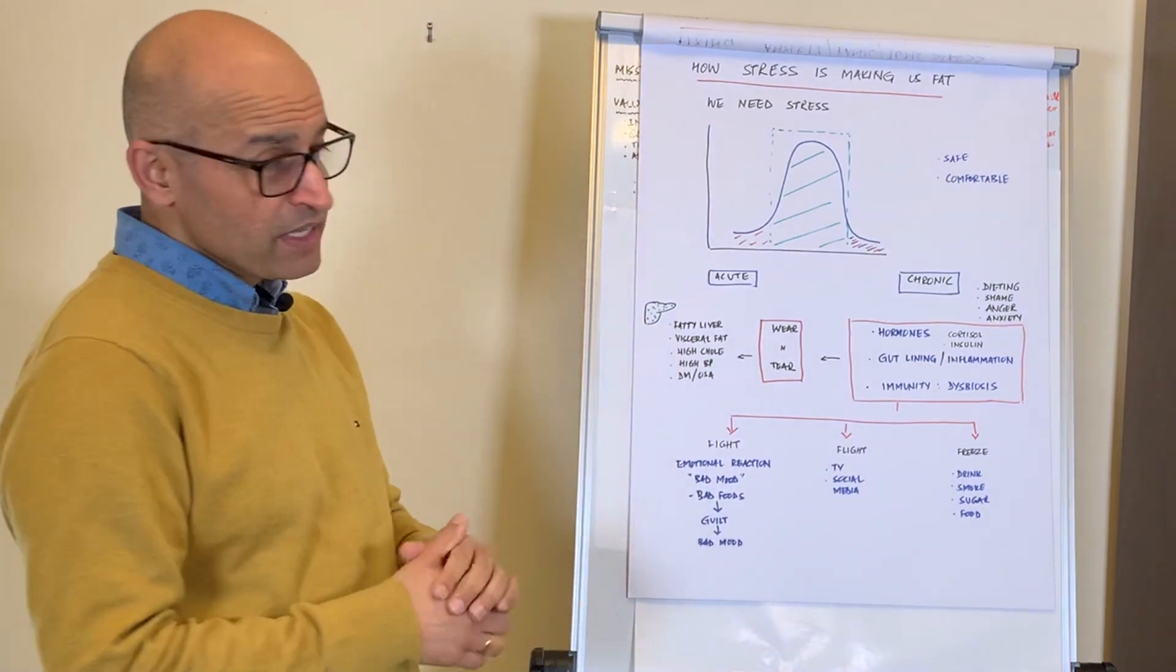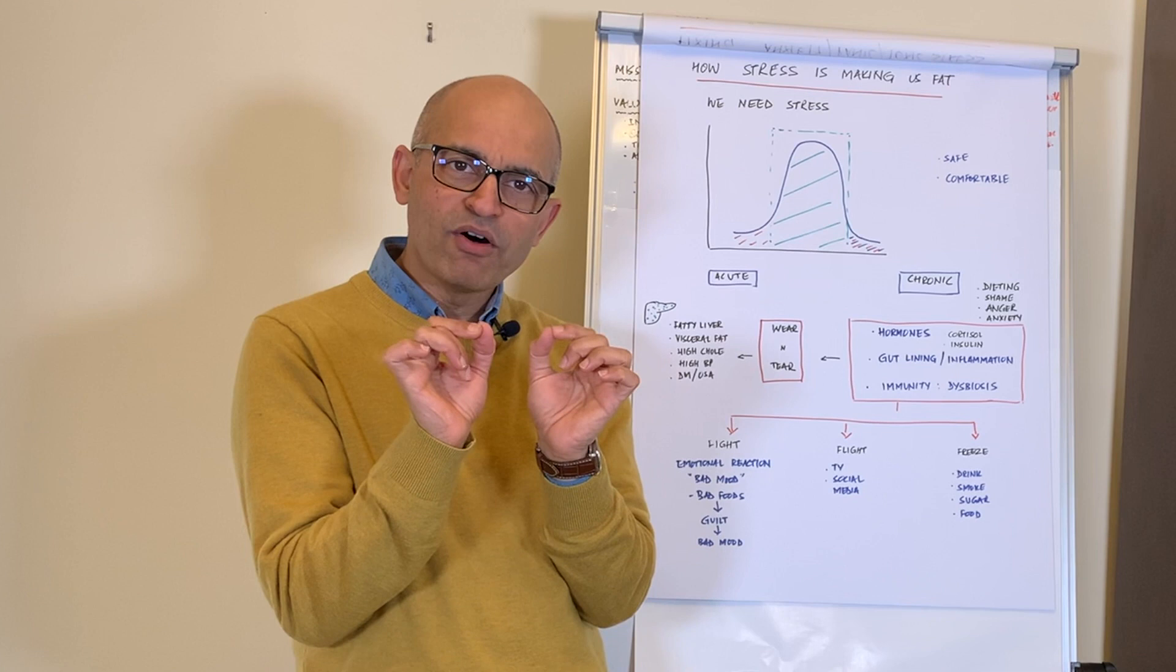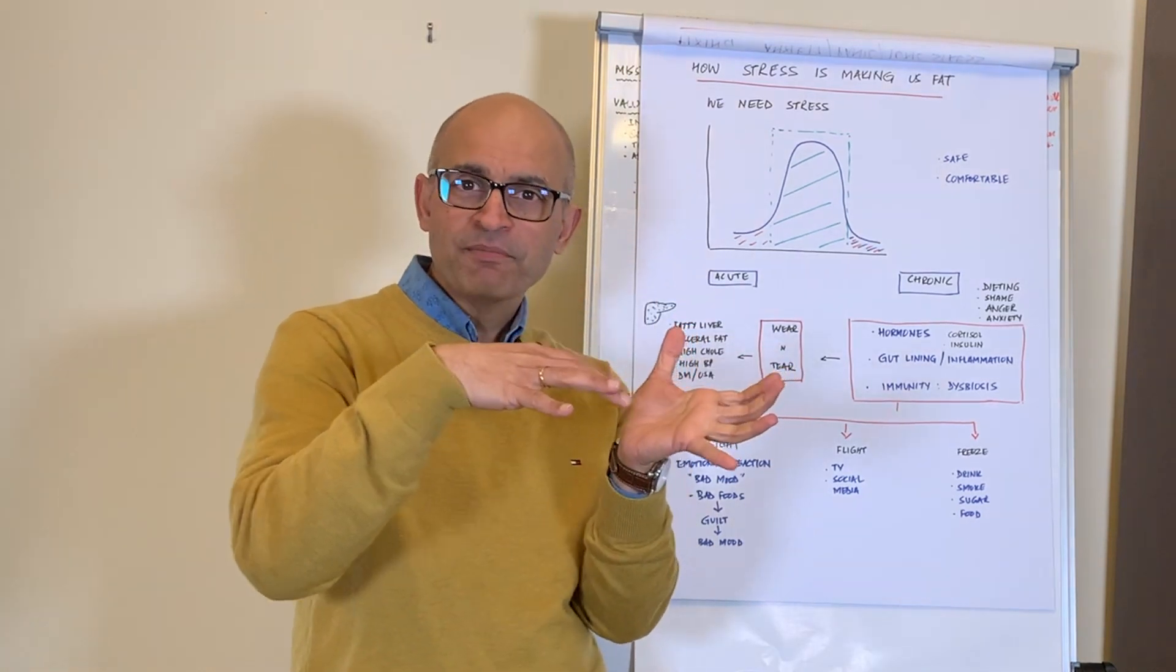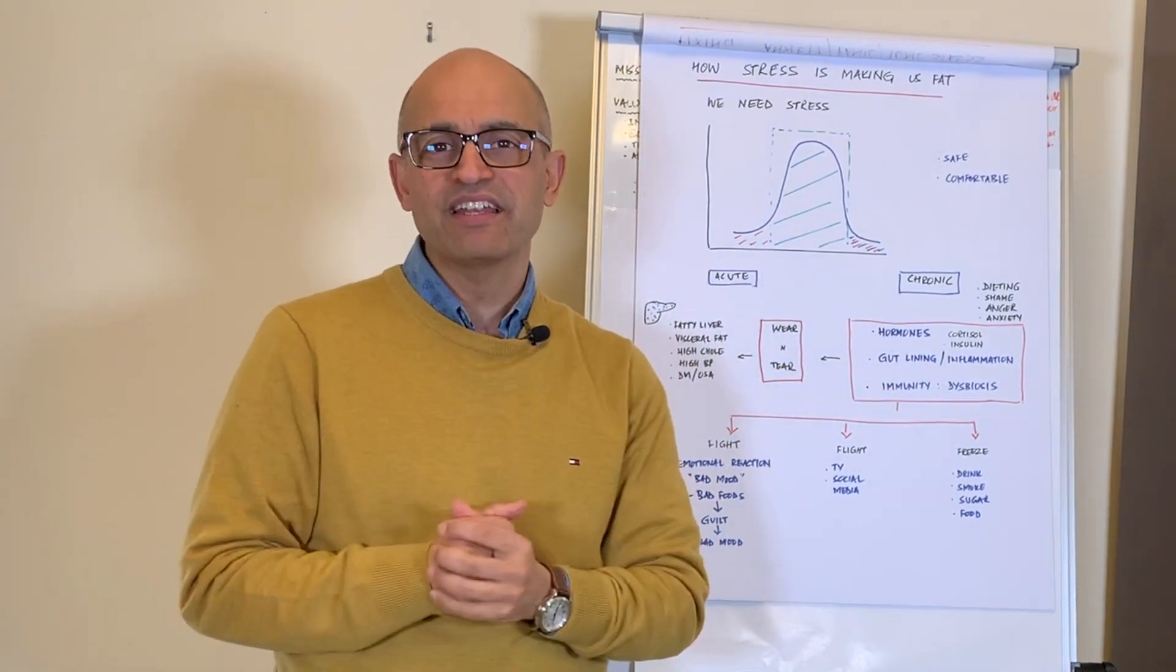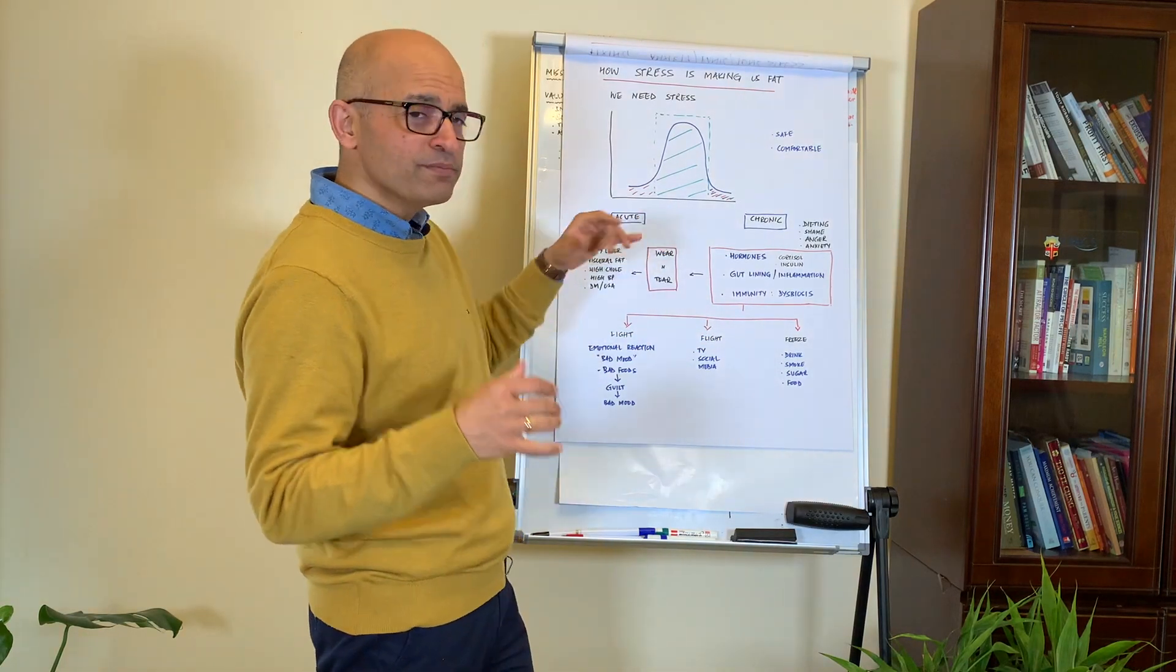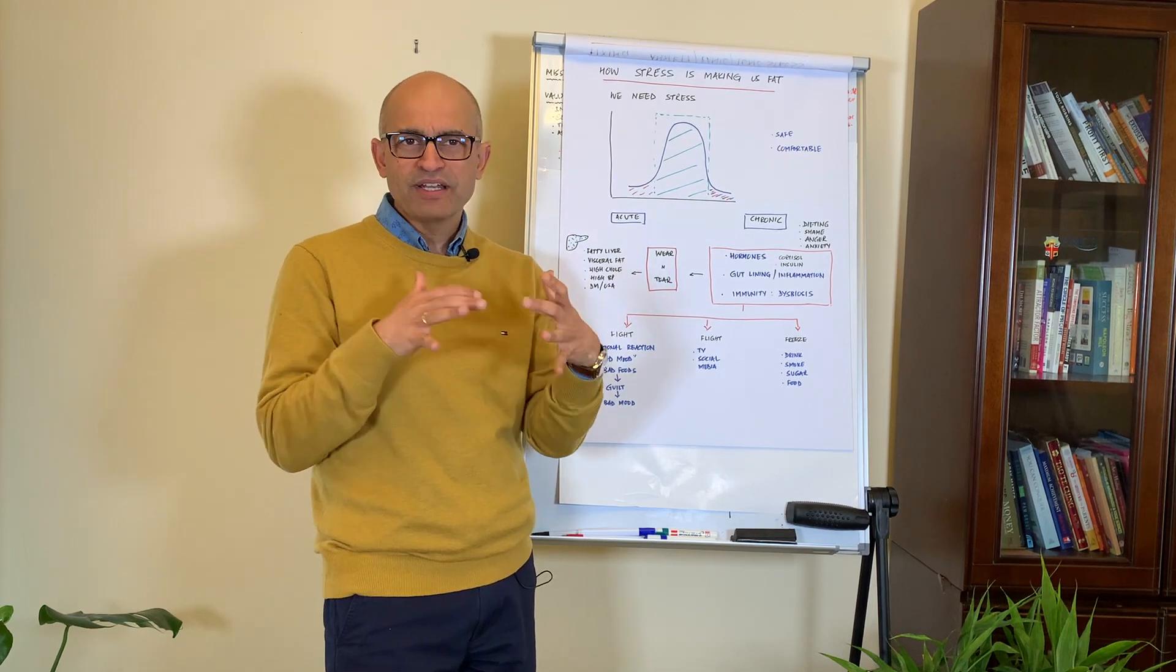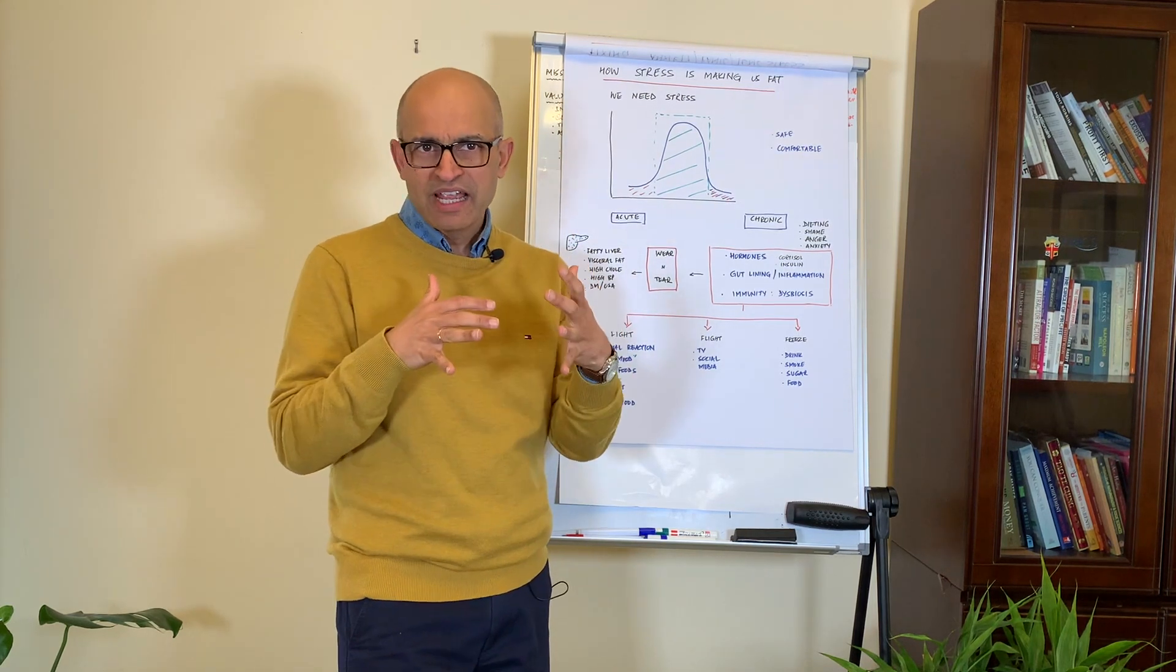Now let's look at what happens when we have the stress response in an acute setting and in a chronic setting, and I'll explain that in a moment because these are fairly medical terms. But acute means short-term. When there is a short-term stress the body has this fight-or-flight response and we either fight it or we flight or run away from it.